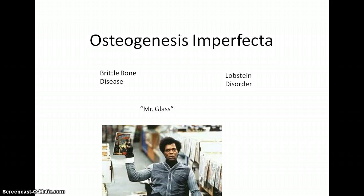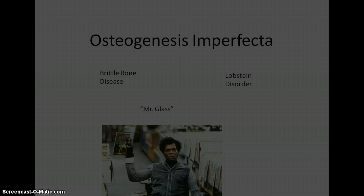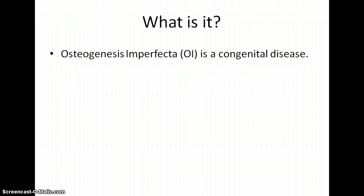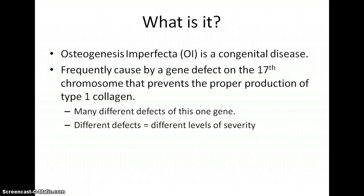It's a pretty good movie, you should check it out sometime. Osteogenesis Imperfecta — I'm going to refer to it as OI for the rest of the video — is a congenital disease, meaning it's present at birth. It is frequently caused by a gene defect on the 17th chromosome, and this defect causes an alteration in the production of type 1 collagen, which is the organic part of bones.